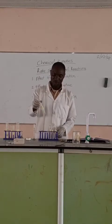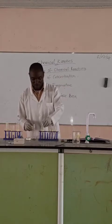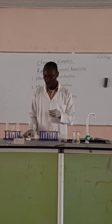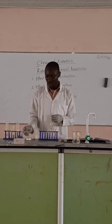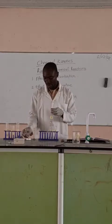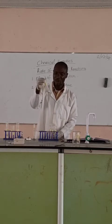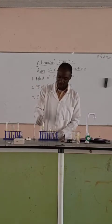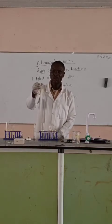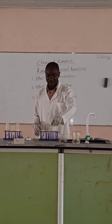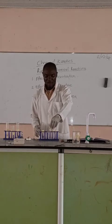For test tubes D, E, and F, we prepare sodium bicarbonate solutions. D will have 2 spatulas of sodium bicarbonate dissolved in 10 ml of water — shake it properly until all content is dissolved before it is ready for reaction. E will have 1 spatula of sodium bicarbonate, and F will have just half a spatula.